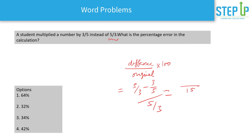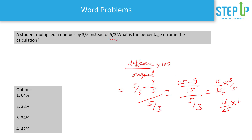Computing the numerator with LCM of 15: (25/15 − 9/15) = 16/15. Dividing by 5/3 is the same as multiplying by 3/5, giving (16/15) × (3/5) = 16/25. Multiplied by 100 gives 64%. The percentage error is 64%, which is the first option.